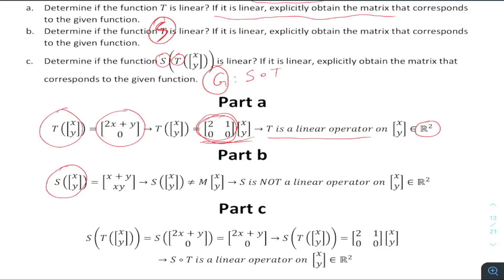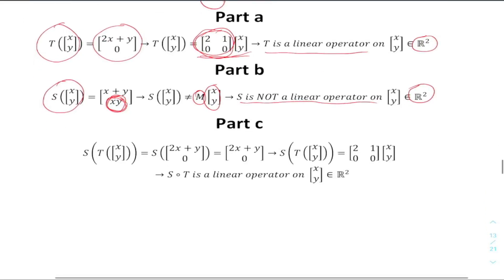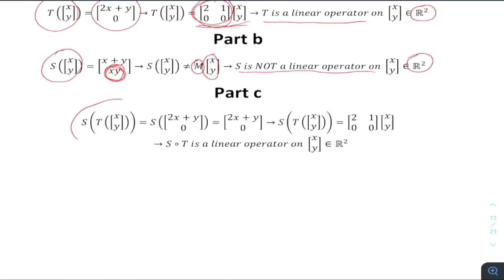For Part B, looking at the S function, we can notice that there is a non-linear term. This term is non-linear. Since there is a non-linear expression, we cannot write S in matrix-times-vector form, so S is not a linear operator on the R² vector space.